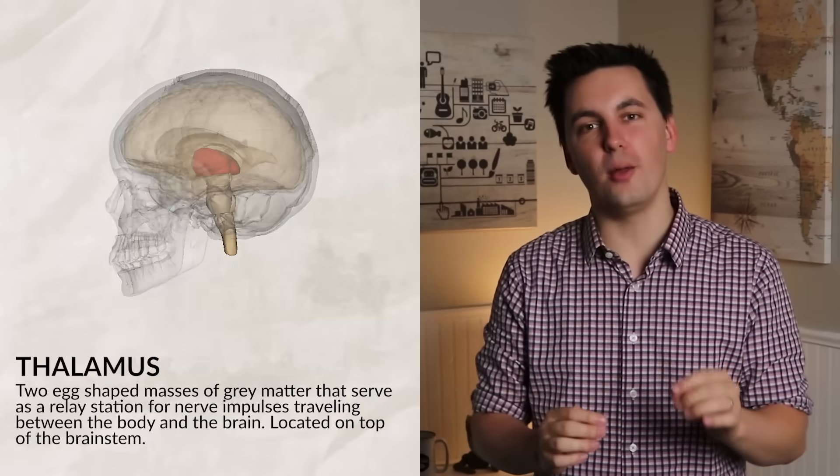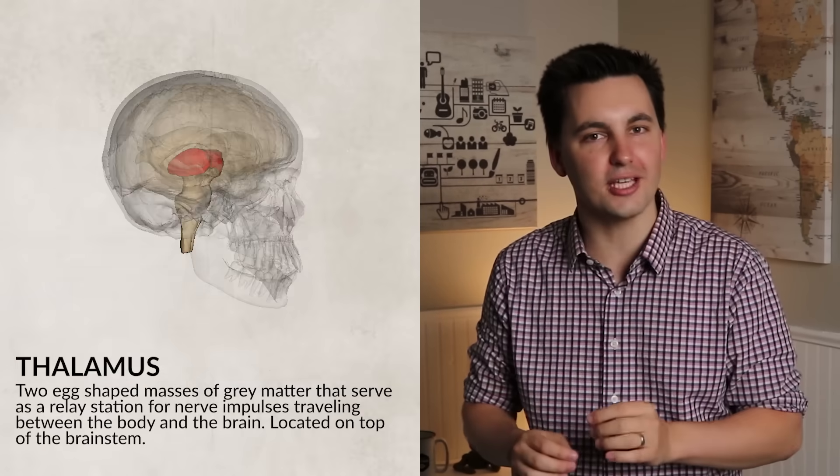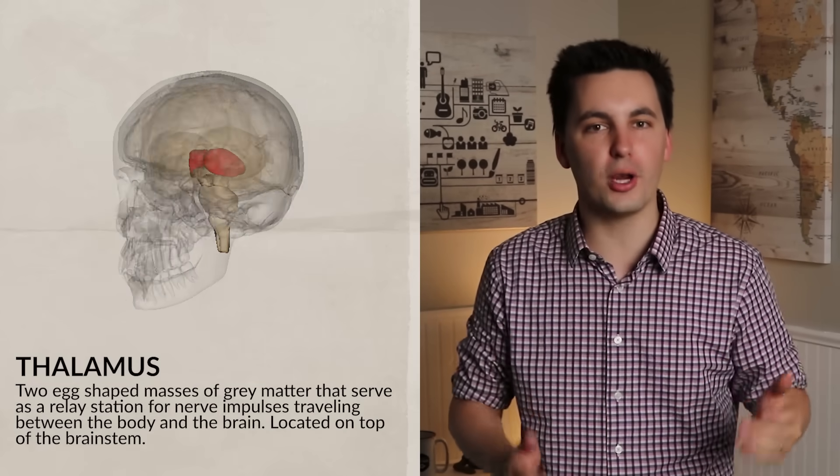All right, the next structure we're going to talk about is the thalamus. It takes all the different sensory information that you get every single second and sends that information to the forebrain to be interpreted. So right now, when you're watching this video, the sound and the visuals are being picked up by your eyes and your ears, and the thalamus is sending the sound information to the temporal lobes and the visual information to your occipital lobes, allowing you to understand the information in this video. The thalamus is a two-symmetrical egg-like structure at the top of the brainstem.